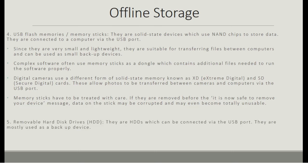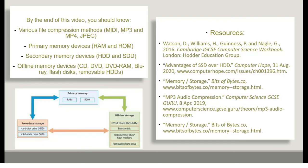Removable hard disk drives are basically HDDs which can be connected via the USB port, and are mostly used as a backup device. By the end of this video, you should know various file compression methods, primary memory devices, secondary memory devices, and offline memory devices. A summary of the different storage devices previously discussed is shown.